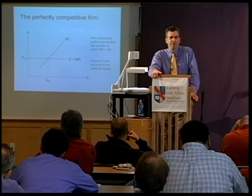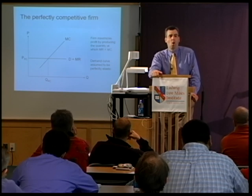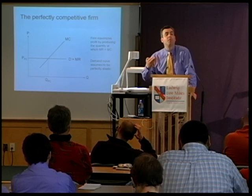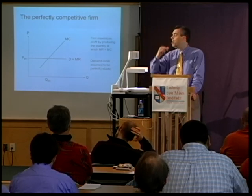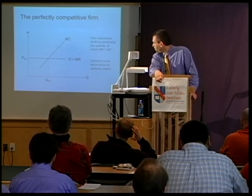What's unique about the perfectly competitive firm is that it is alleged to face a demand curve that is completely flat — perfectly elastic. It's assumed the firm can sell as many units as it wants at the prevailing price PPC without ever driving the price down. The wheat farmer can bring as many bushels to market as he wants and sell every one without ever having to lower the price below the prevailing market price.